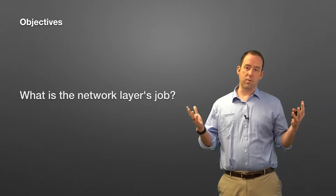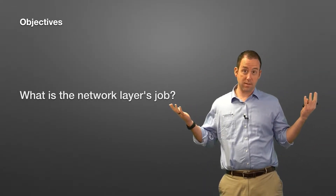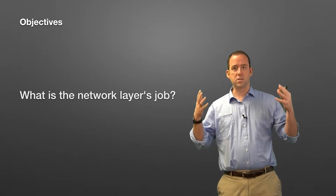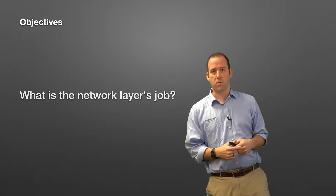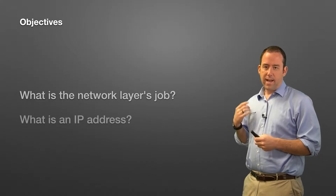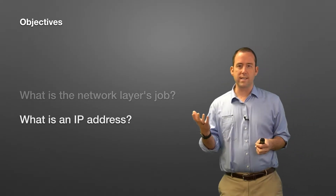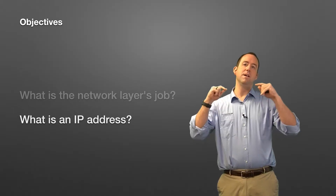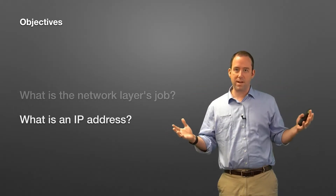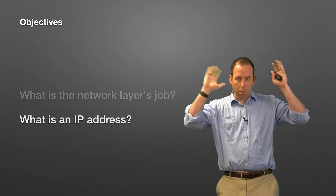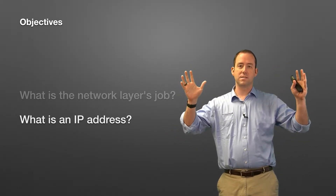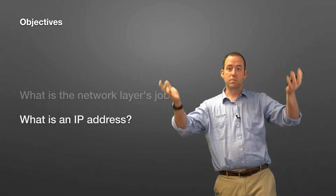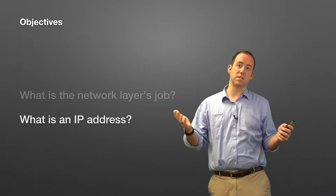You're going to know what the network layer's job is, what it does, and mostly be able to identify what the job of the network layer is. Also, what is an IP address? We talk about IP addresses all the time. When you talk about network stuff, IP addresses come up. Everybody talks about IP addresses — well, what are they? By the end here, you should know the answer to that.